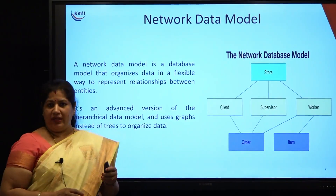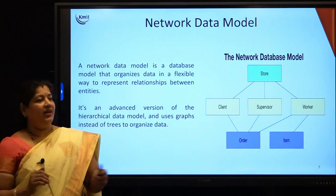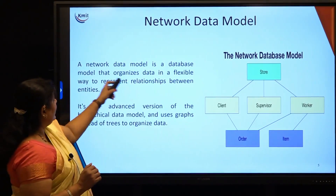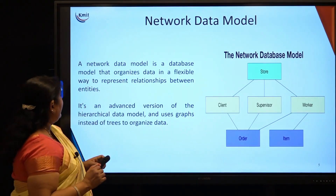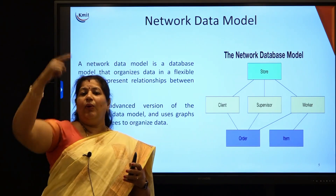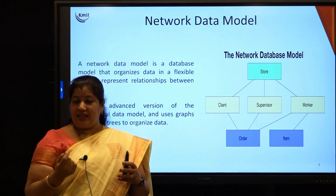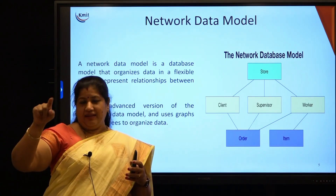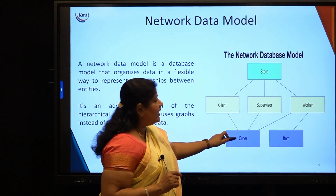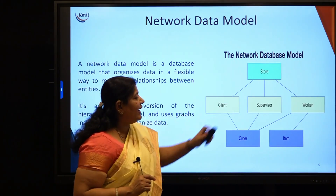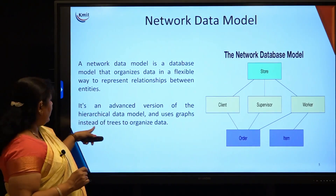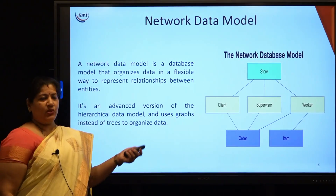Coming to the network model: if the hierarchical model is a tree-like structure, the network model is a graph structure, where the data model organizes the data in a flexible way with relationships between the entities. In a tree structure, there is only one hierarchy — each class can have one teacher and each department can have only one head. But in the network model, there are multiple connections; for example, an order can be accessed both by a client as well as a supervisor. It is an advanced version of the hierarchical data model.